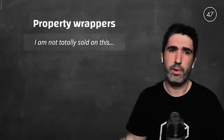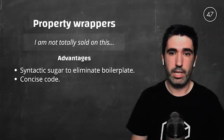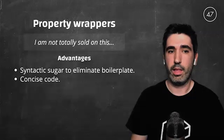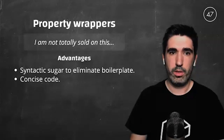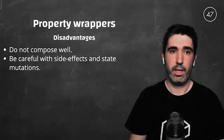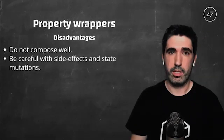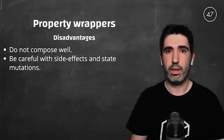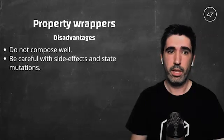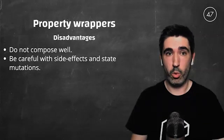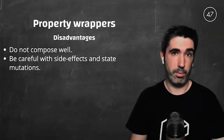Pepe does not seem very happy about property wrappers. Property wrappers have a lot of advantages — comparing the two versions we've seen, they add syntax sugar that eliminates boilerplate and leads to very clean and concise code. But they also have disadvantages. In particular, property wrappers do not compose well — if we want to apply two property wrappers to the same field, it is very difficult or even impossible in some cases. We also have to be careful about side effects and state mutations that may go unnoticed.